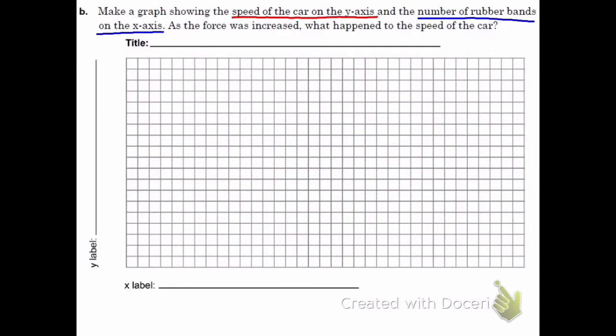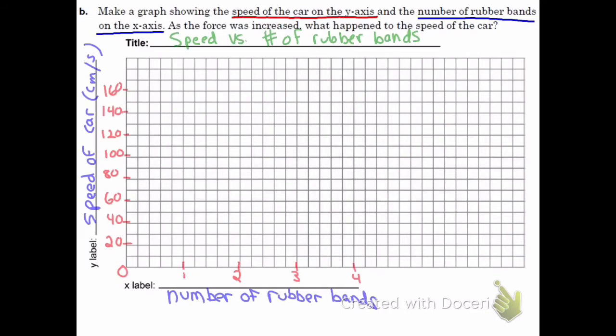Next, you're going to make a graph showing the speed of the car on the y-axis and the number of rubber bands on the x-axis. I would set it up something like this with rubber bands on the x but leaving some space in between. And on the y-axis, you've got the speed of the car, and we're counting by tens. So 0, 10, 20, 30, 40, and so forth.